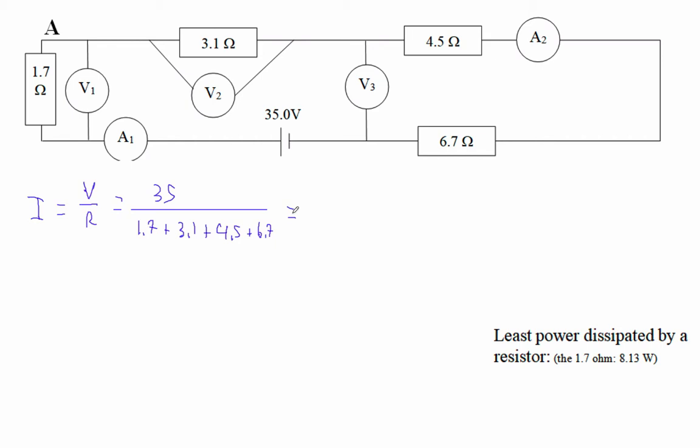Alpha F1 baby, 35 on the top, and 1.7 plus 3.1 plus 4.5 plus 6.7. Did I get them all right? That is 2.1875. Right? So you would say that ammeter 1 is 2.19 amps.